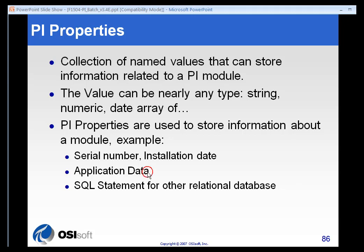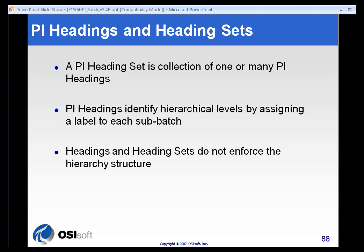Some people use properties to store application data with custom applications, or they use them to hold SQL statements in order to connect to other databases. There are a lot of uses for PI properties. Just remember that there are aliases and properties — aliases are tag values, and properties are constants. The Module Database also has the ability to store what's called heading sets. A heading set is a collection of simple identifiers that we use in order to be able to search. They do not enforce any sort of hierarchy structure — they are simply labels that are helpful in terms of searching.